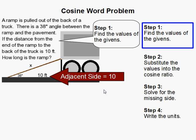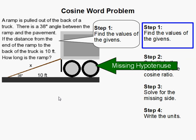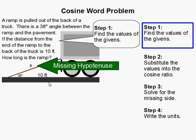So how do I know this is a cosine word problem? Well, we're given the adjacent side. That's the side right next to the angle. And we are looking for the hypotenuse. So that tells me that we have adjacent and hypotenuse, use cosine.